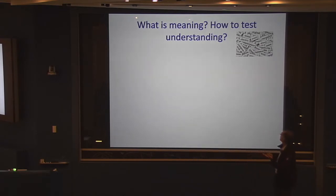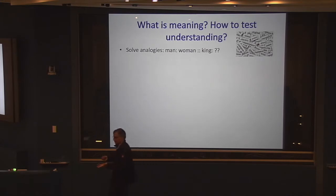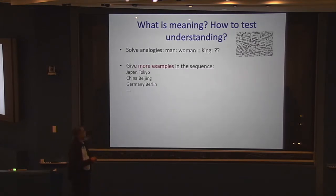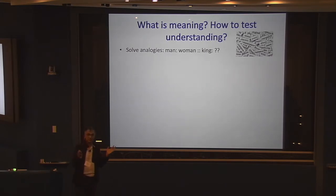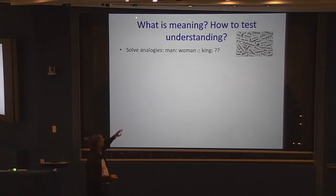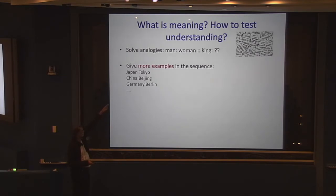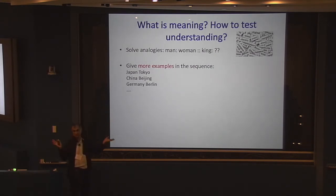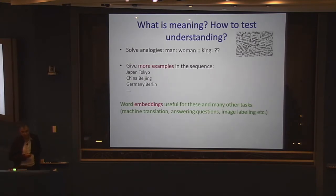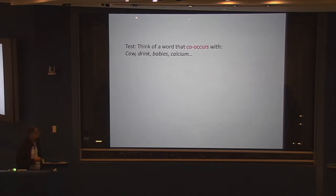Word embeddings are useful for analogies and many other tasks like machine translation, answering questions, and image labeling. They are vectors which capture meanings of words. The distributional hypothesis of meaning from linguistics — Harris and Firth in the 1950s — says that a word's meaning is determined by the words it co-occurs with. For instance: think of a word that co-occurs with cow, drink, babies, and calcium — the answer is milk. So if you know the distribution of all other words that co-occur with a word in a normal corpus, you've pinned down the meaning.